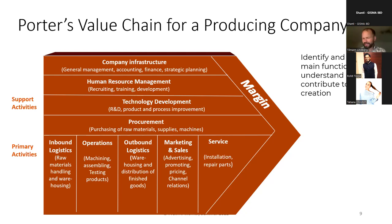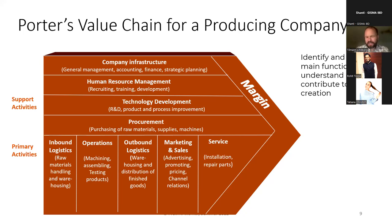All these primary activities are linked to delivering value for customers. But companies also have support activities: HR departments, purchasing, infrastructure management — fleet, buildings, etc. — and technology development, which is more future-oriented rather than part of the present supply chain. The core question is: do these support activities help you deliver better products and services for customers? If yes, they contribute value. Otherwise, they may be overhead where we can focus on efficiency.